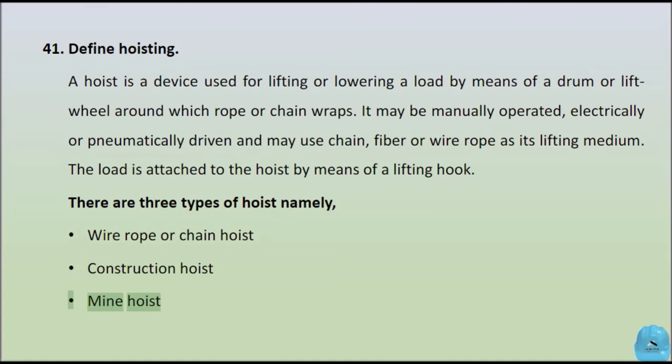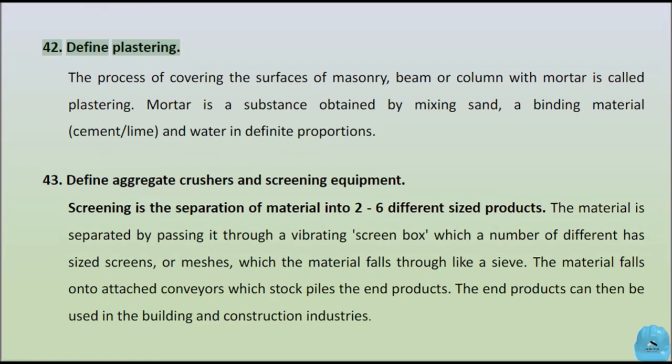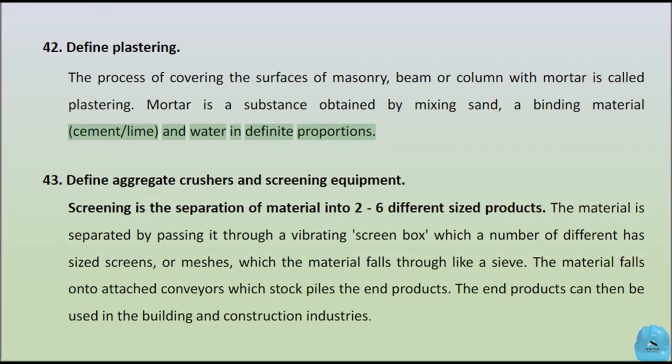Define plastering. The process of covering the surfaces of masonry, beam, or column with mortar is called plastering. Mortar is a substance obtained by mixing sand, a binding material — cement or lime — and water in definite proportions.